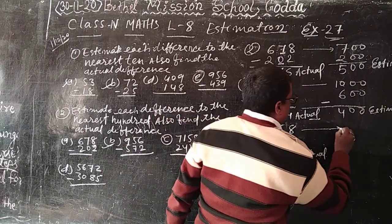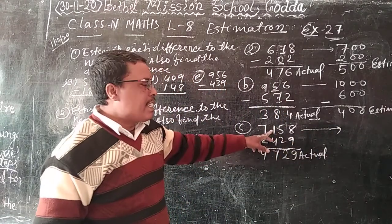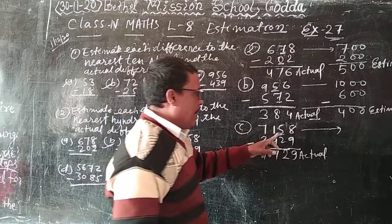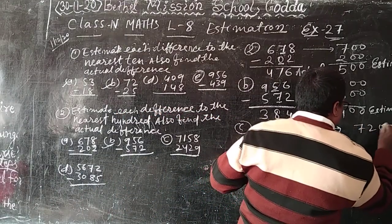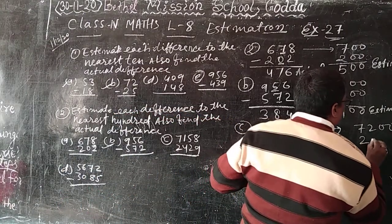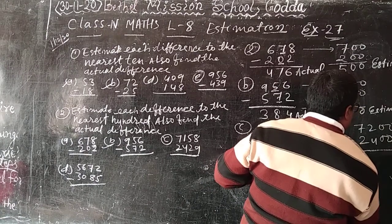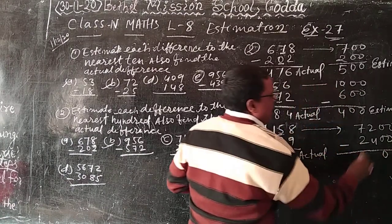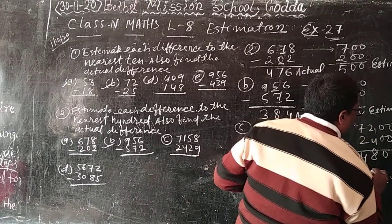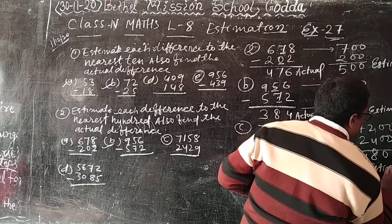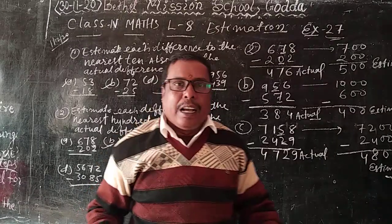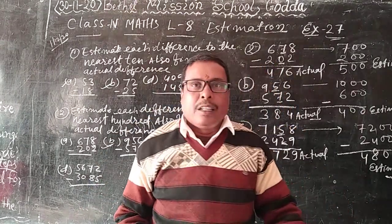And here I estimate of nearest 100. So 5 is equal to 5, so plus 1, 7500. 2 is less than 5, so here I write 2400. 7500 minus 2400, 12 minus 4, 8. 6 minus 2, 4. This is estimate, 5100. Nearest of 100.